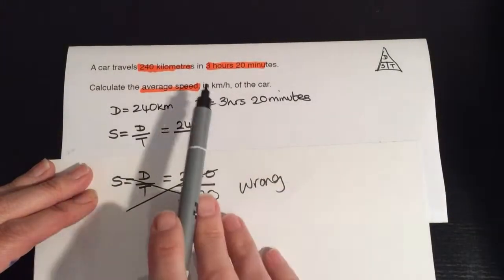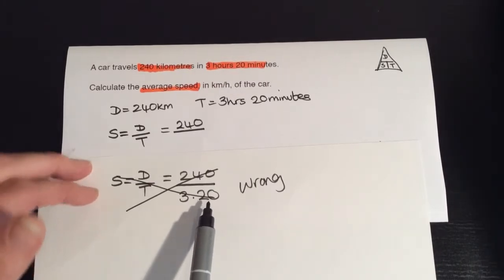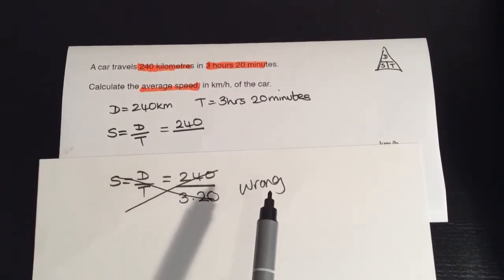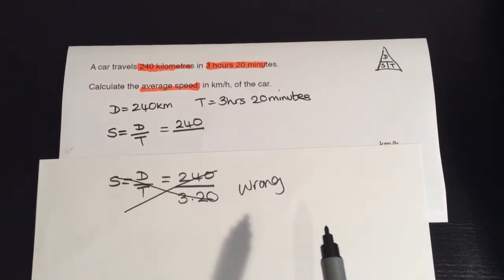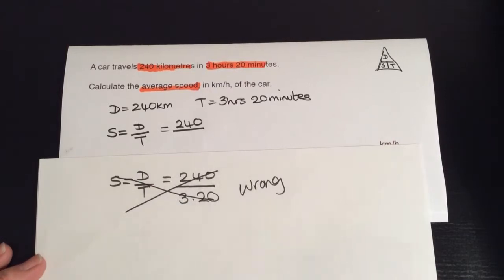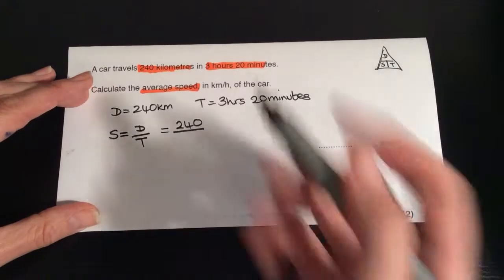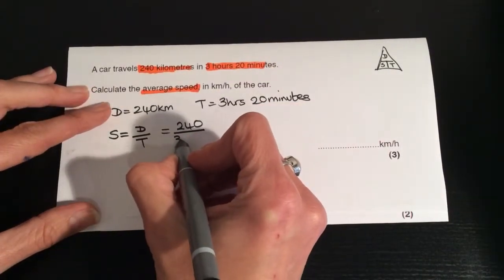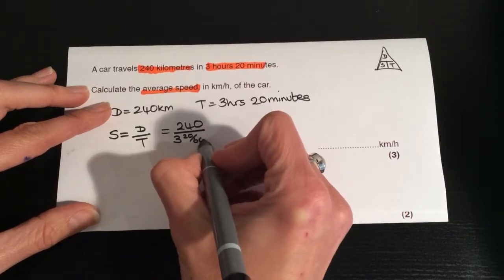Okay, because the speed needs to be in kilometers per hour. If you do 3.2, then 0.2 of an hour doesn't make sense. Because 20 minutes is 20 minutes out of 60 minutes in an hour. So that method is completely wrong. You have two alternatives to use. You can say that it's 3 hours and 20 minutes out of 60 minutes in a whole hour.